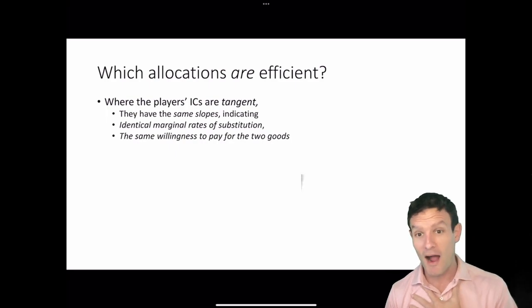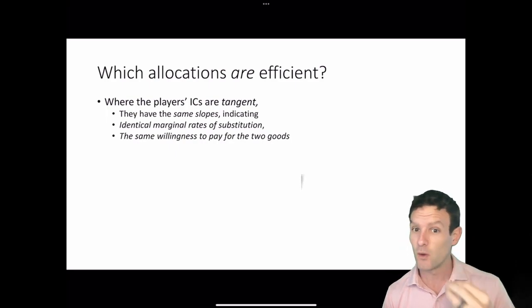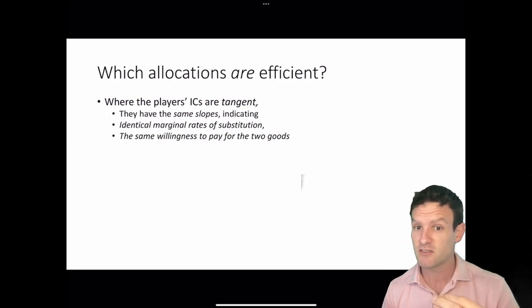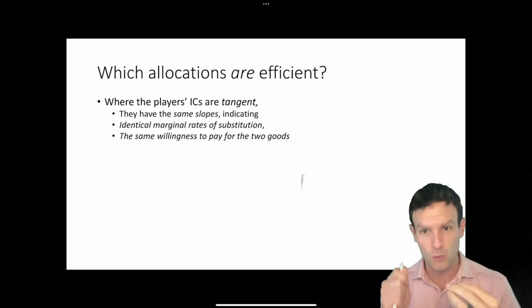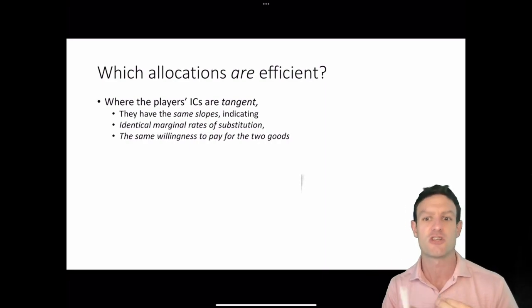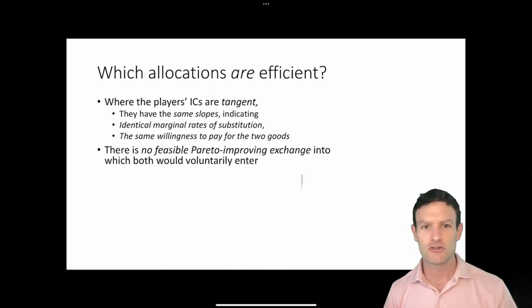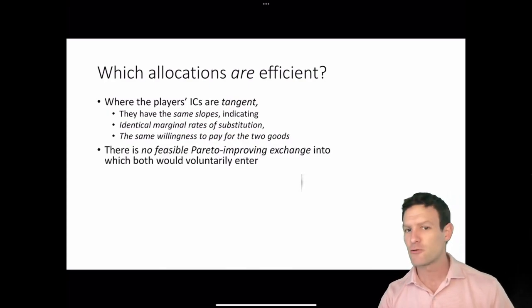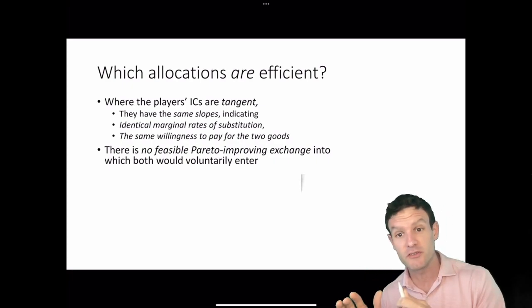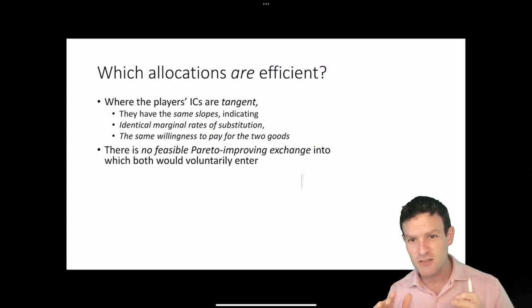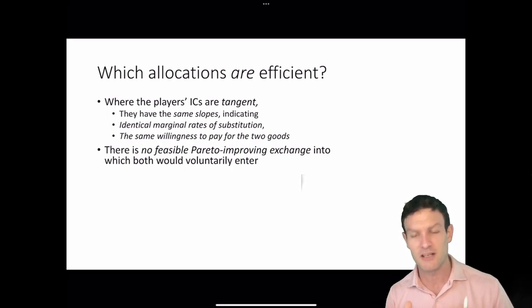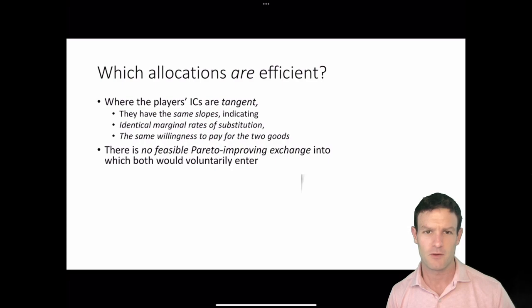The amount of Y that Ianda is willing to pay to get an additional unit of X is identical to Biko's willingness to pay in Y to get an additional unit of X. When that occurs, it means there is no feasible alternative Pareto improving exchange — they have obtained as much as is feasible given the constraints.